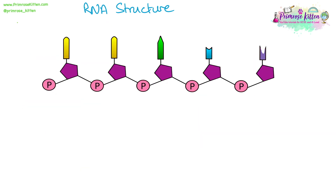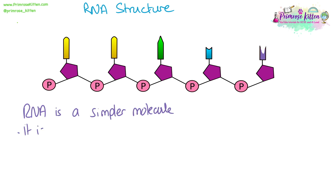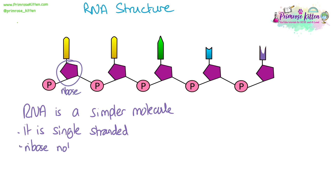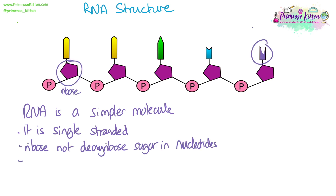We also need to know about the structure of RNA and its differences to DNA. RNA is considered a simpler molecule because it's single stranded, not double stranded, and it's much shorter than the DNA molecule in your cells. It contains ribose and not deoxyribose as the sugar in its nucleotides, and there are no thymine bases — all of those have been replaced with uracil instead.